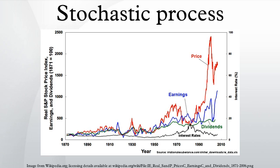Familiar examples of processes modeled as stochastic time series include stock market and exchange rate fluctuations, signals such as speech, audio and video, medical data such as a patient's EKG, EEG, blood pressure or temperature, and random movements such as Brownian motion or random walks. Examples of random fields include static images, random terrain, wind waves, or composition variations of a heterogeneous material.